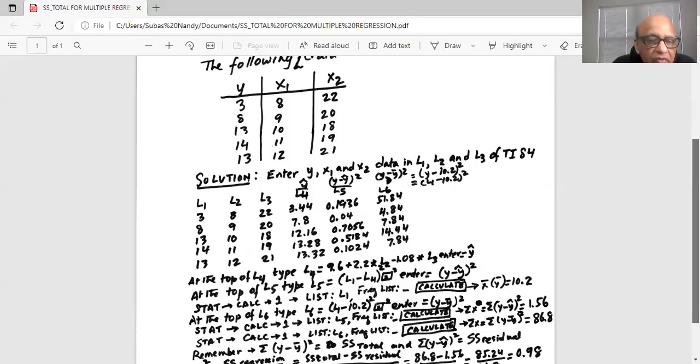So we move our cursor to the top line in L6 and type in parentheses L1, which is second one, which is y minus 10.2, close the parentheses, press the x square button to get the exponent 2 and enter. So L6 is filled up with y minus y bar square.